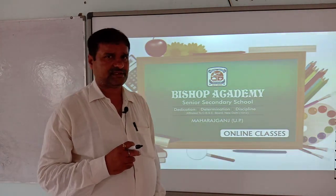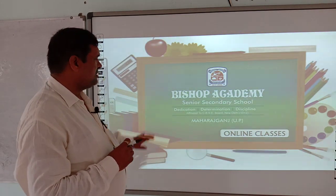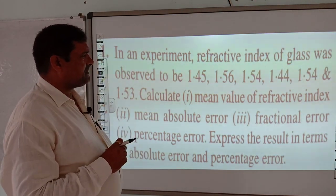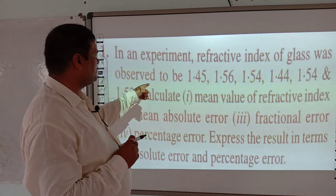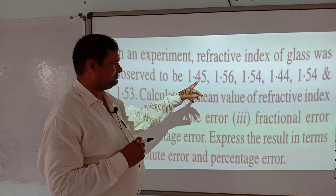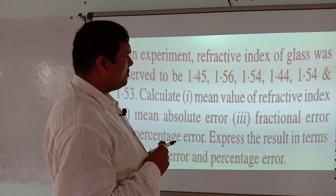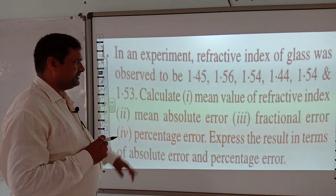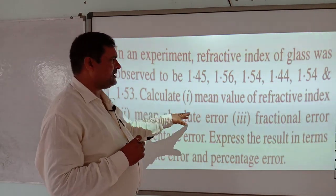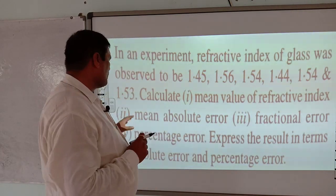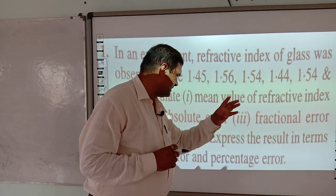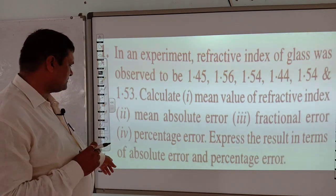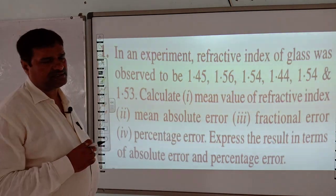Today I will discuss the first numerical. In an experiment, the refractive index of the glass was observed to be 1.45, 1.56, 1.54, 1.44, 1.54 and 1.53. Calculate the mean value of refractive index, mean absolute error, fractional error and percentage error.